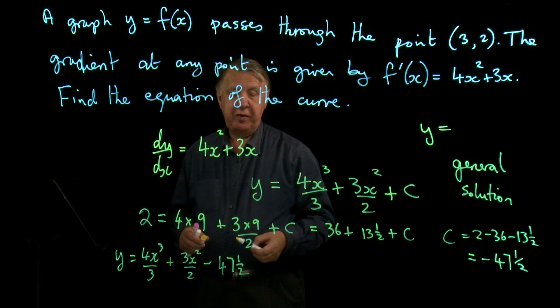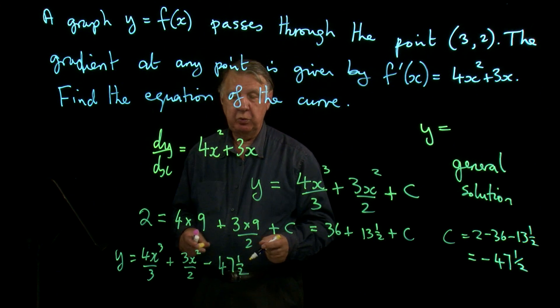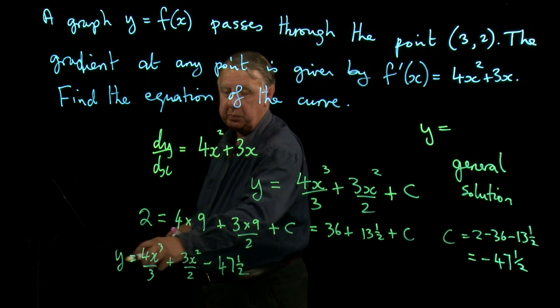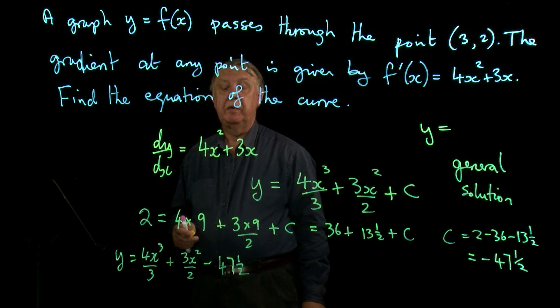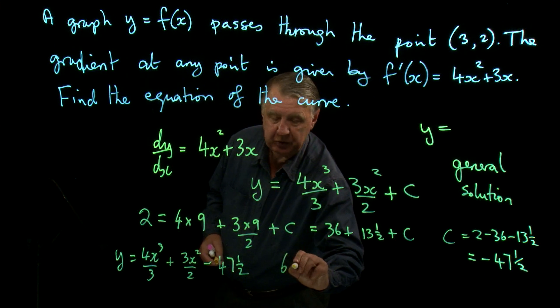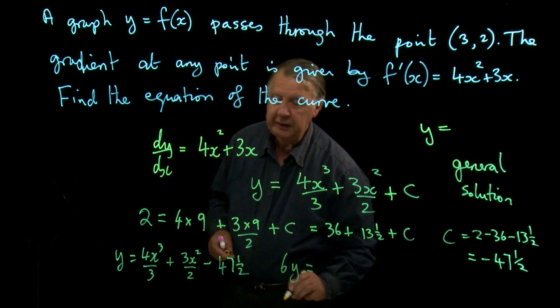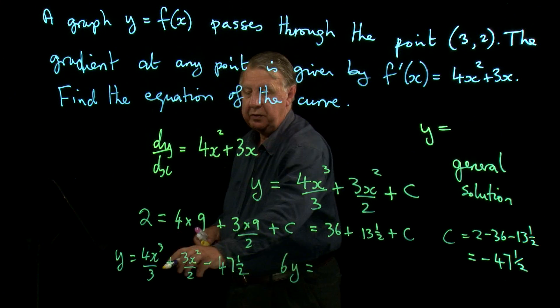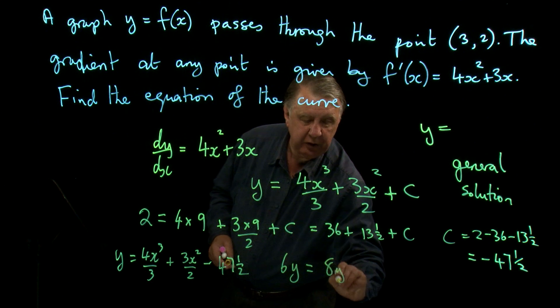And yes, it's got fractions in, but the alternative is if you multiply through by 6, then if you wanted to do that, you'd get 6y equals 6 times this is 8x³.